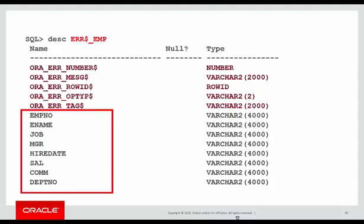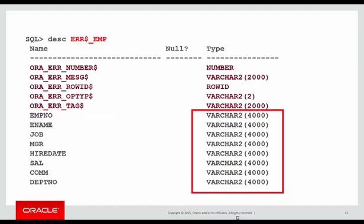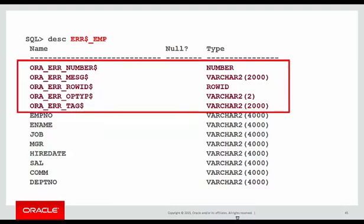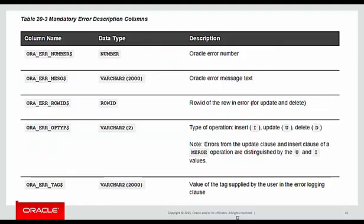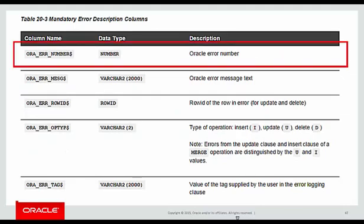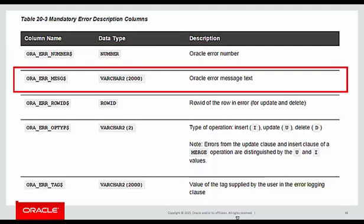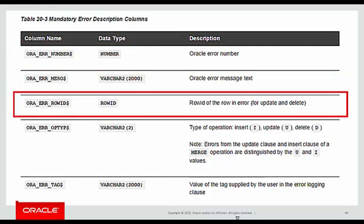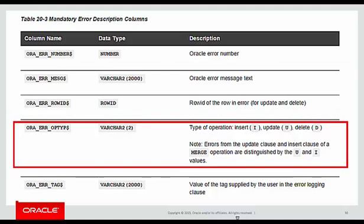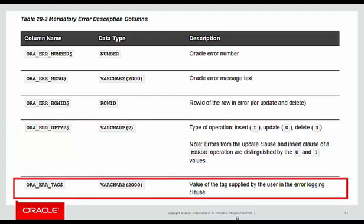By default, a table prefixed with ER$ will be created in your schema, but you have total control over that using other parameters in the package call. The error logging table contains all the columns of your target table — the one you're going to load into — but the data types are chosen so we can capture the bad data as well. We also have five additional columns: the Oracle error number, the error message, the row ID in the source table so we can easily look up any bad row, the operation being performed — because DML error logging works for inserts, updates, deletes, and merge commands — and finally an optional tag we can associate with the bad rows.